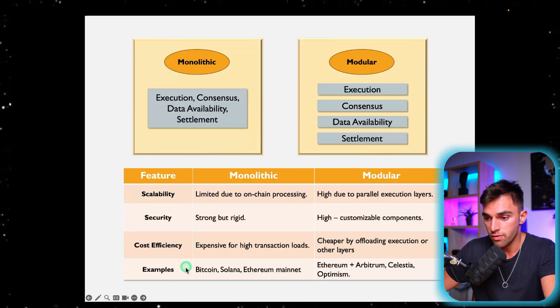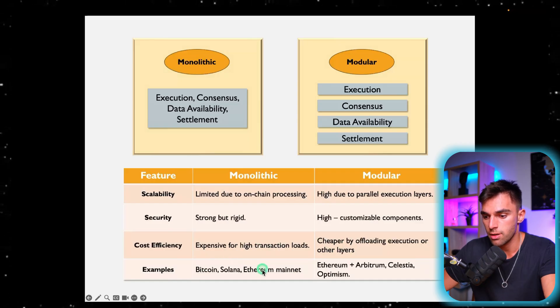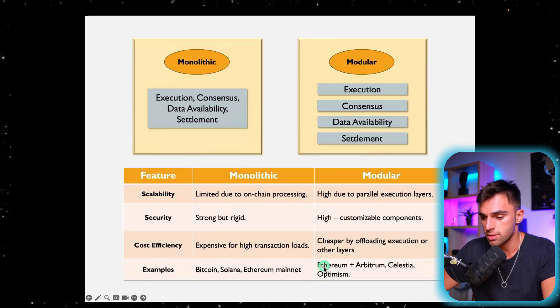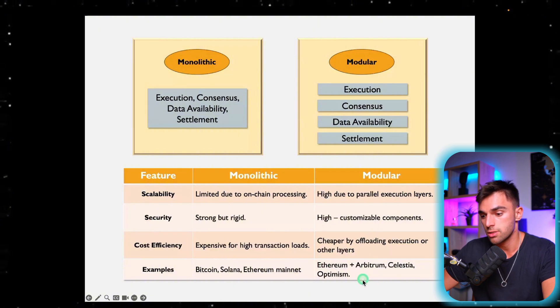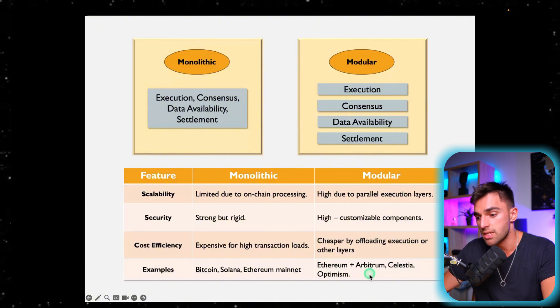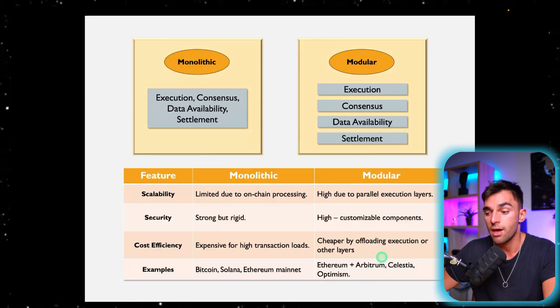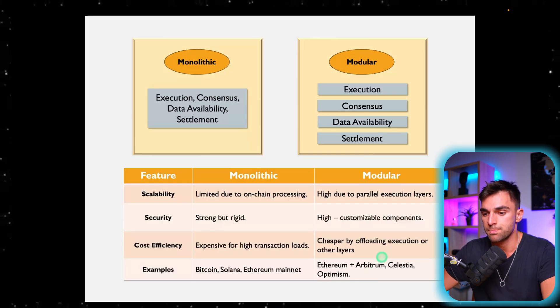Examples of monolithic blockchains include Bitcoin, Solana, and the Ethereum mainnet. Modular blockchains include Ethereum plus Arbitrum — so Ethereum and its Layer 2s — as well as Celestia and Optimism.